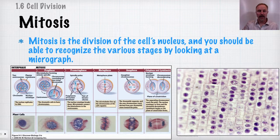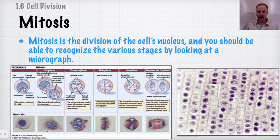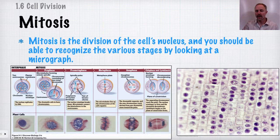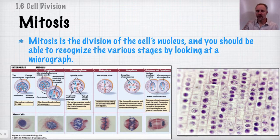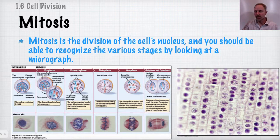Once the proteins holding sister chromatids together break down, you enter anaphase — the genetic material is hauled to opposite ends of the cell where new nuclei will form. In telophase and cytokinesis, the new nuclei reform and the cytoplasm divides. Looking at a micrograph of onion cells, you can identify darker-stained interphase cells, metaphase cells, anaphase cells, cells in prophase or prometaphase, and telophase/cytokinesis cells where you can see cell walls forming between the two new cells.